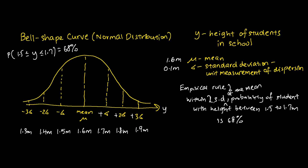Within two standard deviations of the mean, the probability of students with height between 1.4 and 1.8 meters is 95 percent. So if you select a student in school, the probability of this student's height being between 1.4 and 1.8 meters — within two standard deviations of the mean — is 95 percent. In other words, P(y is between 1.4 and 1.8 meters) = 95 percent, where y represents the height of students in school.